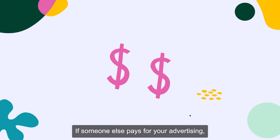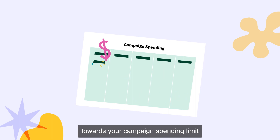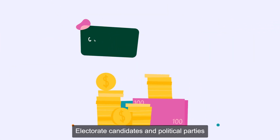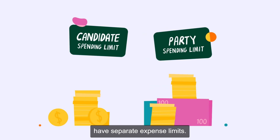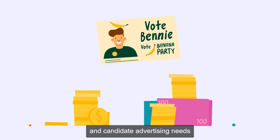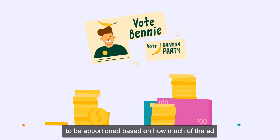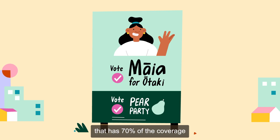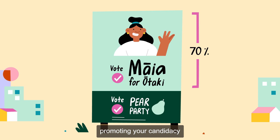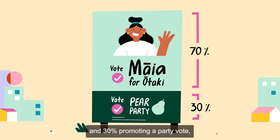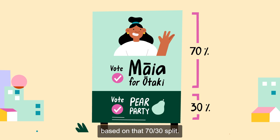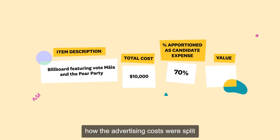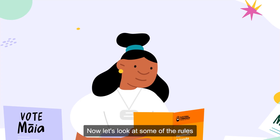If someone else pays for your advertising, anything they spend will still count towards your campaign spending limit and will also count as a candidate donation. Electorate candidates and political parties have separate expense limits. This means joint party and candidate advertising needs to be apportioned based on how much of the ad was promoting the party or the candidate. So if you have a billboard that has 70% of the coverage promoting your candidacy and 30% promoting a party vote, then the costs need to be apportioned based on that 70-30 split. And in the return, you'll need to show how the advertising costs were split between you and your party.